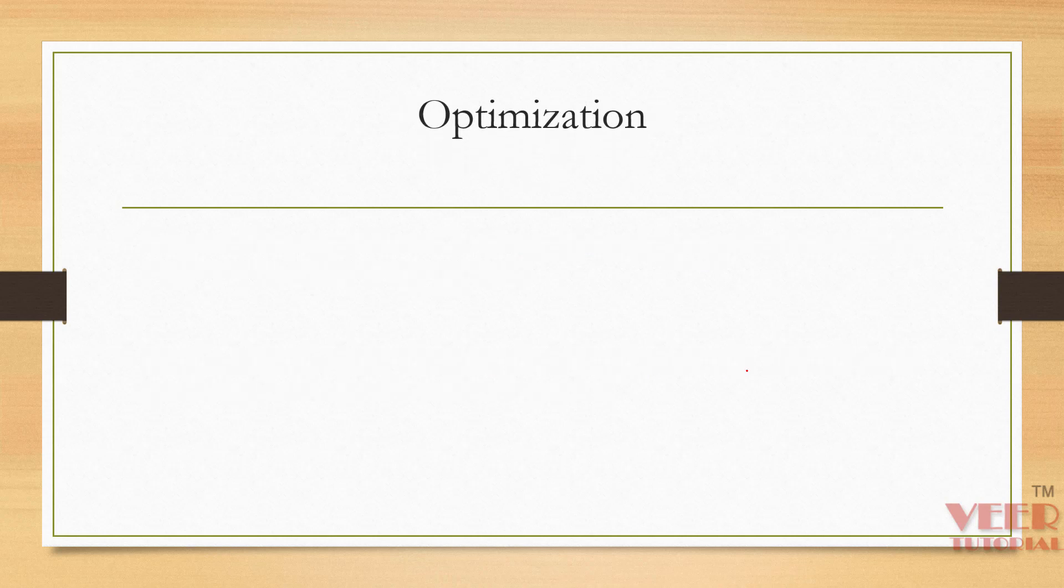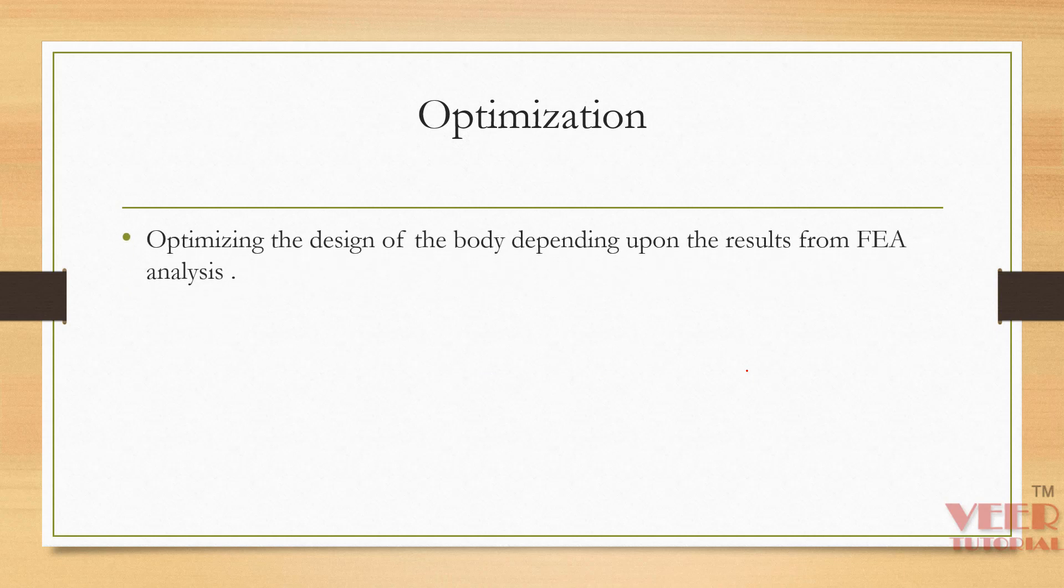After performing the analysis, we have design optimization. Once we perform the analysis, we need to optimize the design. Optimize means reducing cost and material. If the geometry is failing, we need to provide extra support and ribs inside the body.